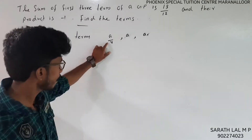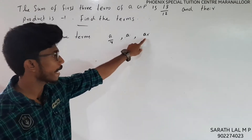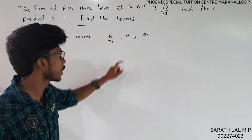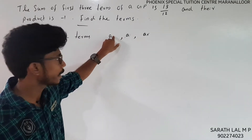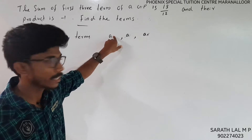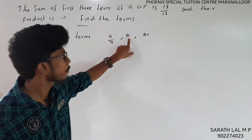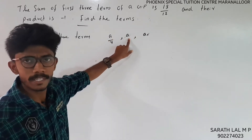The first three terms of a GP are written as a/r, a, and ar. Their product: a/r times a times ar equals a³. So a³ equals minus 1, which gives a equals minus 1.